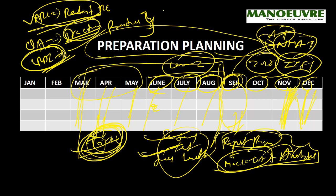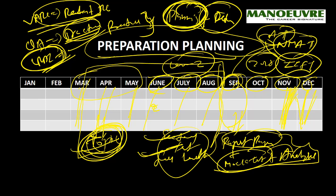If you really want to crack CAT 2018, you have to work on two parts: first is planning, and second is determination. If you work on both planning and determination, it is definitely possible to crack CAT with a good percentile in your first attempt.